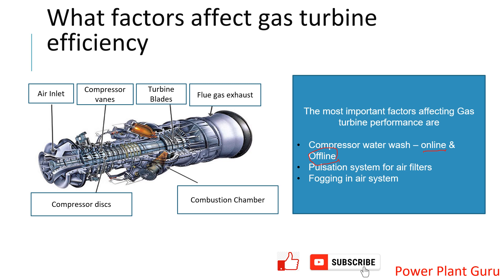Next is the pulsation system for the air filter. The inlet air filter system is very important for efficiency and heat rate. There is an online mechanism in each gas turbine where high-pressure compressor air is blown from inside out through the air filters. This cycle is repeated for a few filter elements at a time, dislodging dust deposited on the outside of the filters and keeping them clean. If the pulsation system in your plant is not working, you should check and do the required maintenance to restore it.